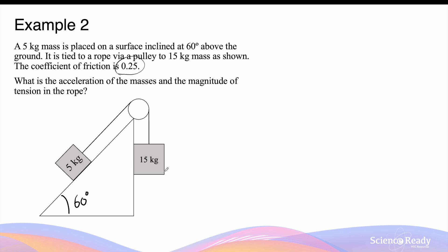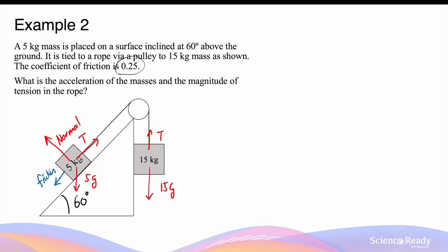Let's start by drawing free body diagrams for the two masses. For the 15kg mass, we have a downward weight force and an upward tension force. For the 5kg mass, we again have a downward weight force 5g, a tension force running along the length of the rope upwards, a normal force perpendicular to the inclined surface, and this time we actually have friction going down the slope that will resist the motion of the 5kg mass. Again, we'll define the downward direction for the 15kg mass as positive and upward as negative. This means the direction going up the slope for the 5kg mass is positive, and the direction going down the slope is negative.